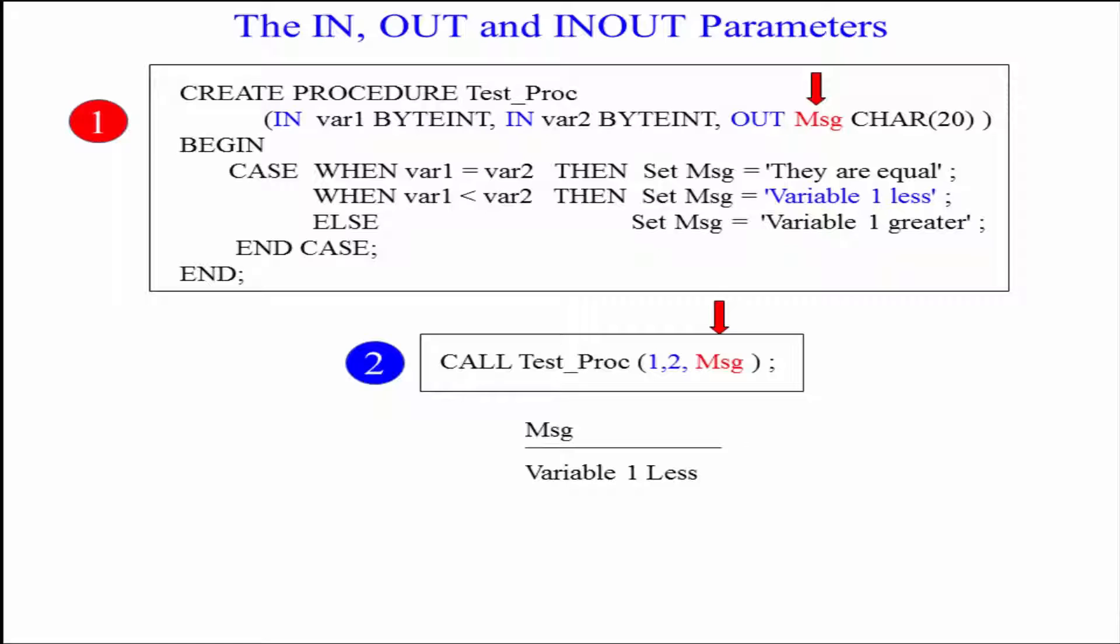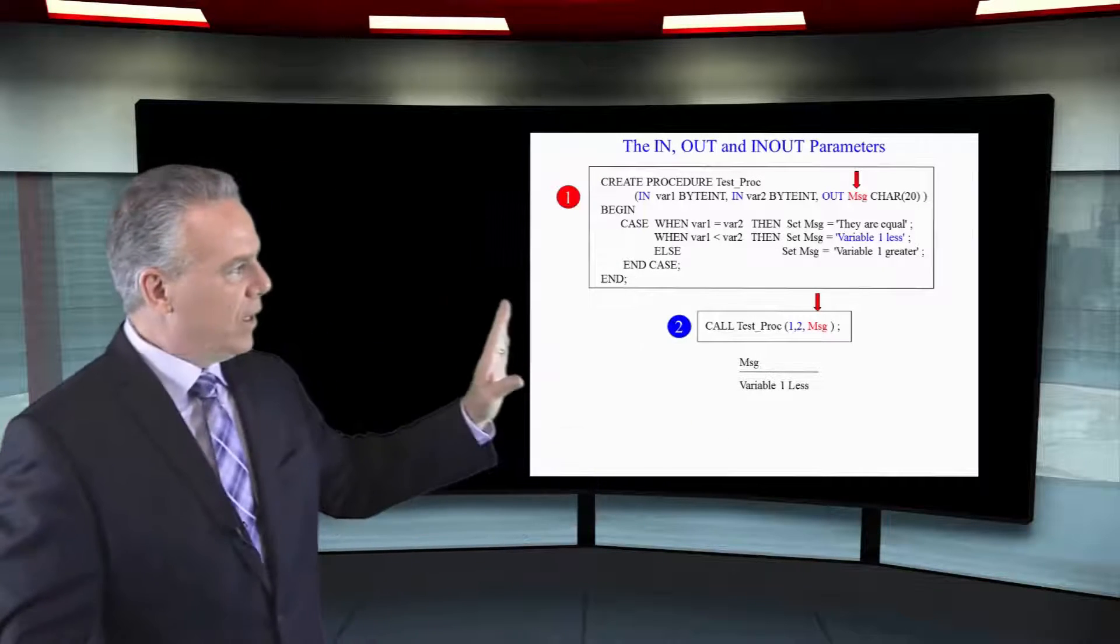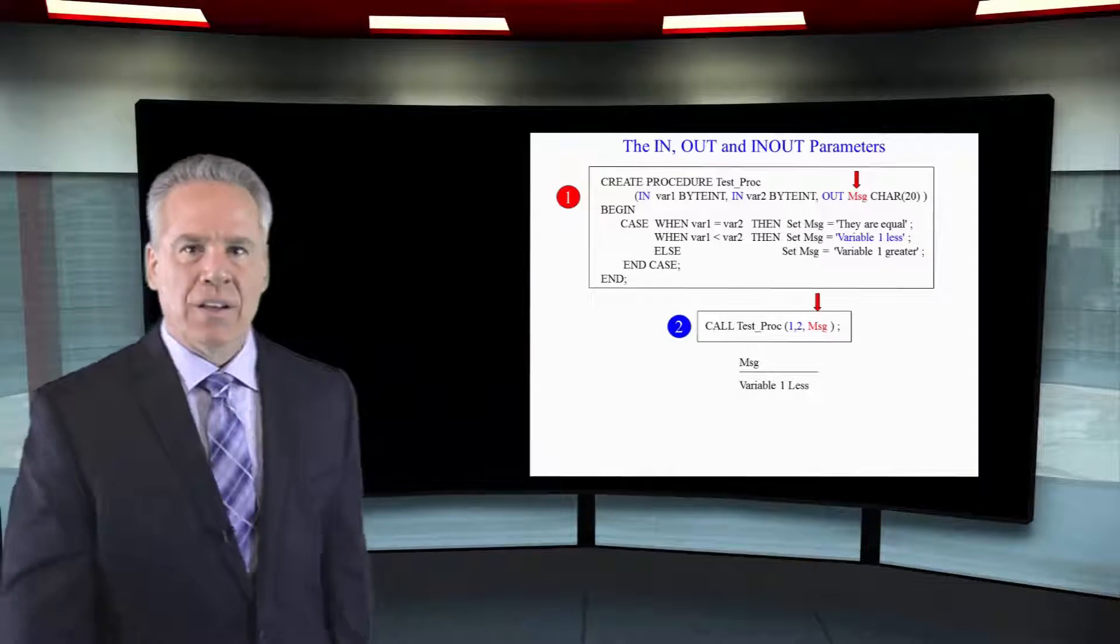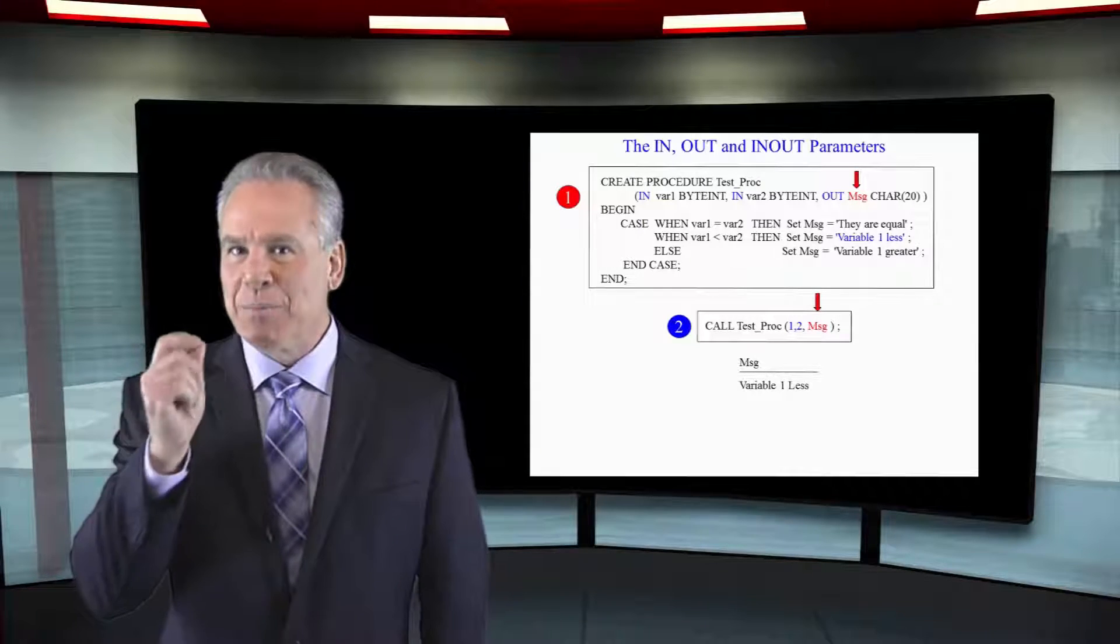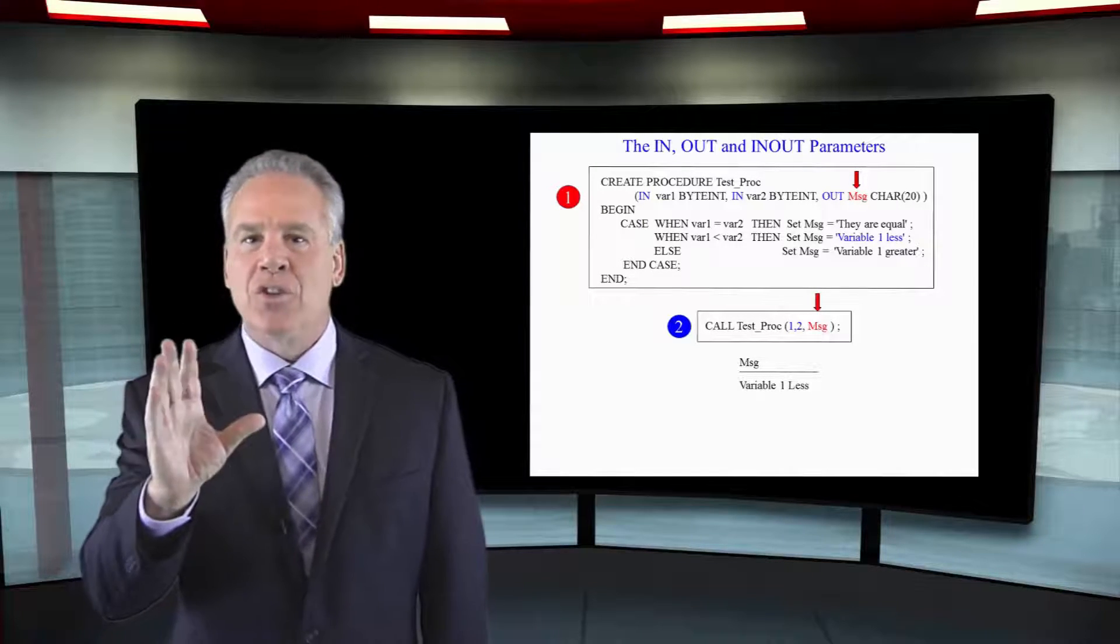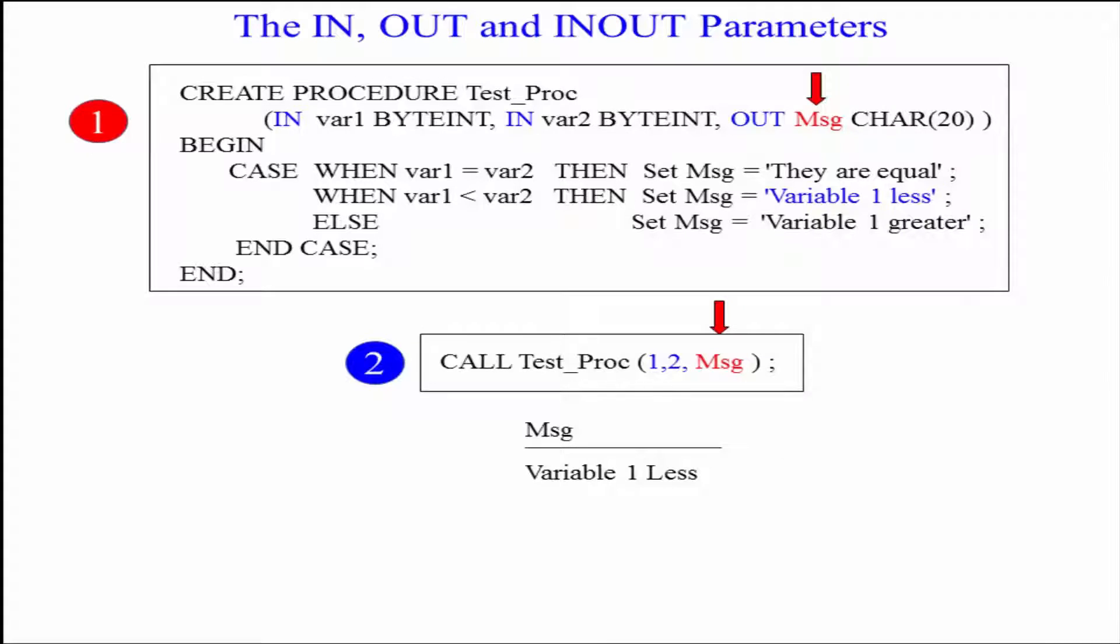Then I've got an out parameter called message. Now if you don't specifically state IN you can leave that off. It defaults to IN but you've got to specifically state OUT. So now we've got two input parameters and one output parameter. Let's start the procedure. We're going to begin and we have of course our end statement at the end.